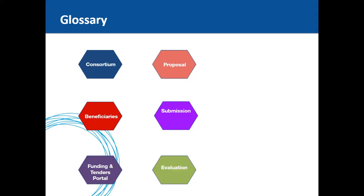Experts can award each criterion on a scale from zero to five, with half points also given. The consortium agreement is a private agreement between the beneficiaries to set out the rights and obligations amongst themselves — it does not involve the European Commission or any agency and is done internally.